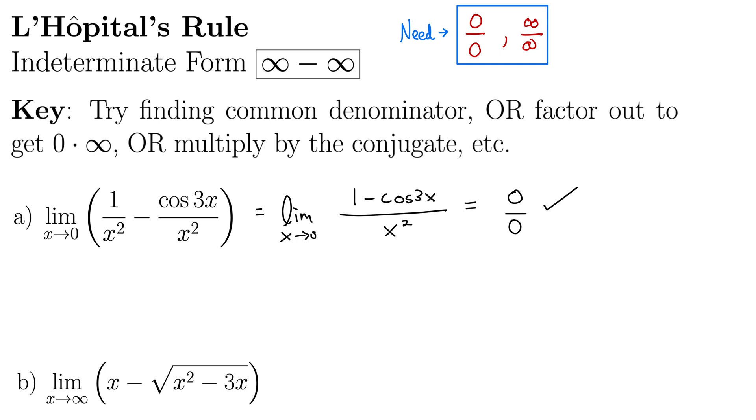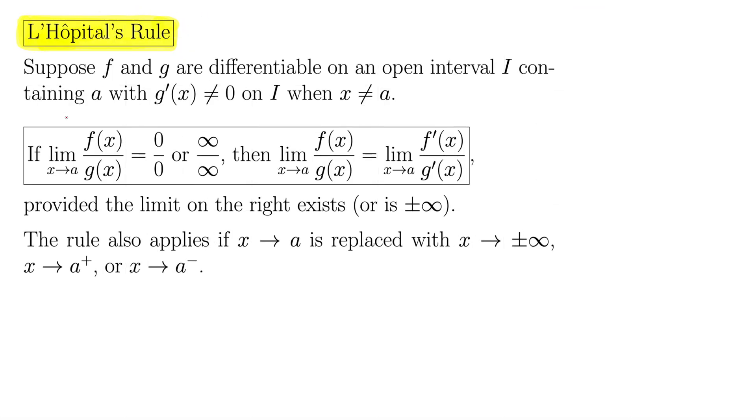Let's review L'Hôpital's rule just to make sure we know where we're headed. The important thing is that we need this fraction, this ratio of functions to be zero over zero or infinity over infinity. If that happens then that same limit can be found by taking the derivative of the top and the derivative of the bottom. Note that that's not the quotient rule. It's just the flat derivatives. Much easier than the quotient rule.